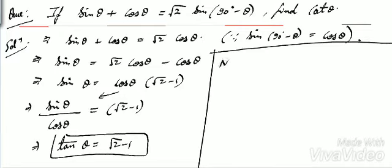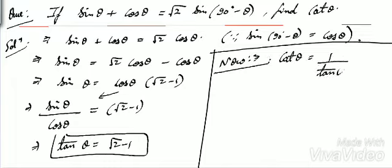Now, we know what is cot θ. We have to find cot θ. So cot θ is 1 / tan θ. Cot θ = 1 / tan θ. So cot θ = 1 / (√2 - 1), the tan θ value we found out.